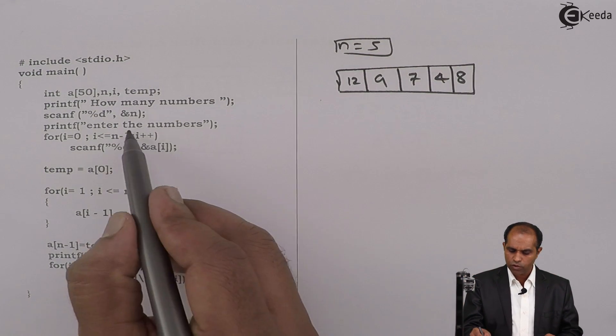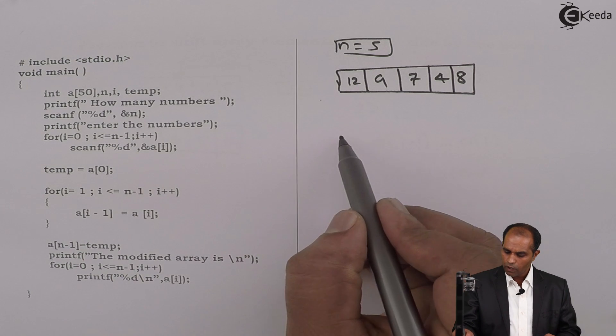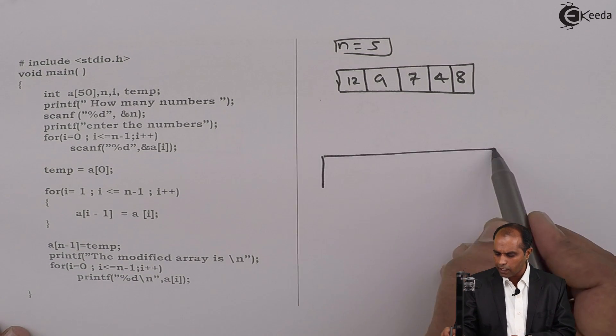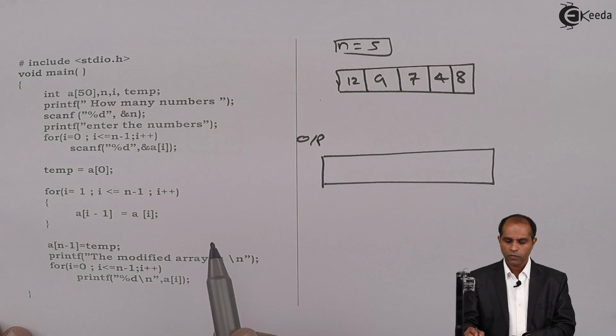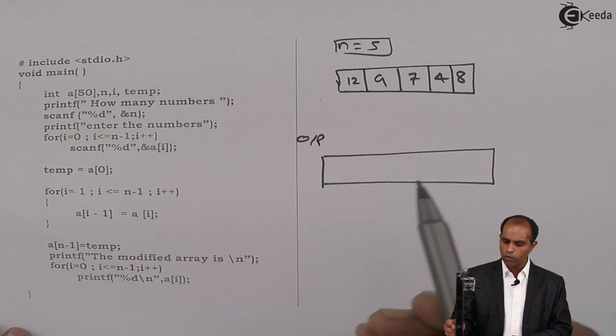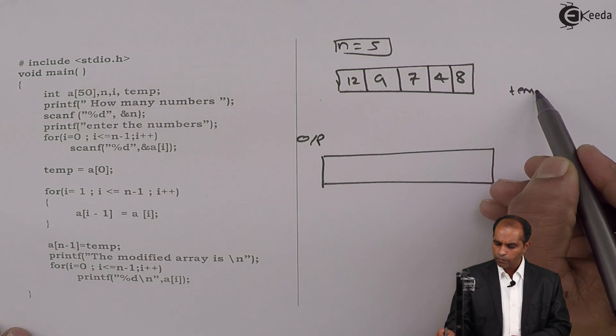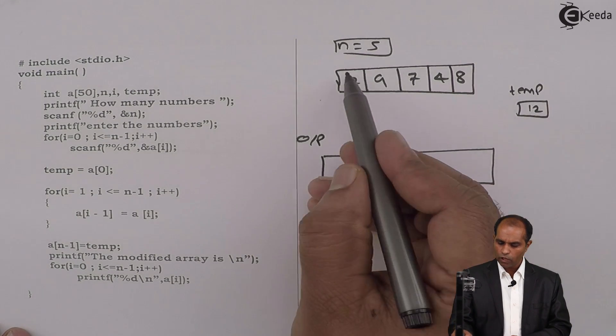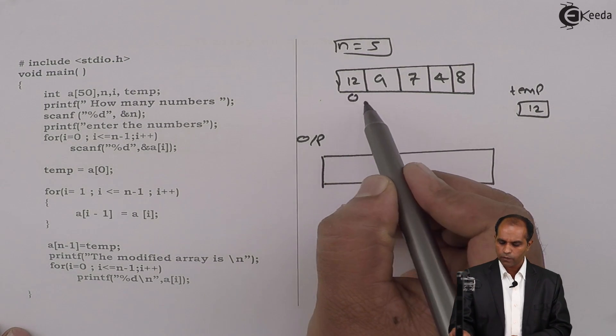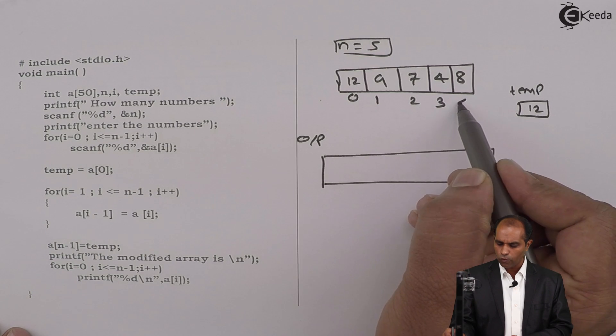Now, shift these elements towards left-hand side by one position. So I will write this array and this is my output array. So what it says? a[0] should be copied onto temp. So temp will become 12. a[0] goes to temp. So this is 0, 1, 2, 3, 4.